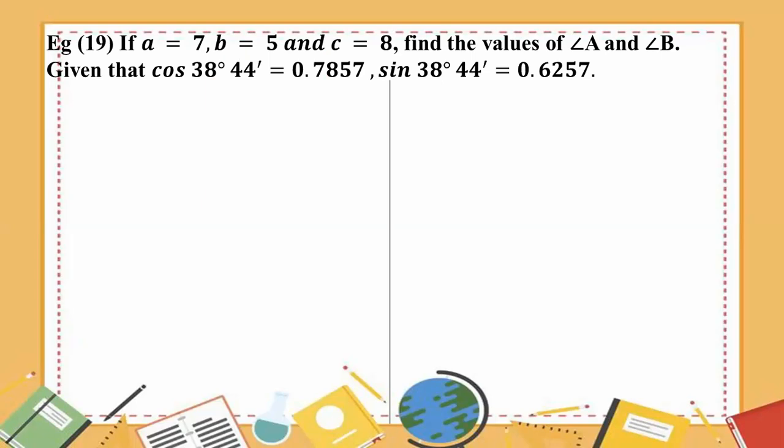Cos 38 degrees 44 minutes equals 0.78570. Sin 38 degrees 44 minutes equals 0.6257.